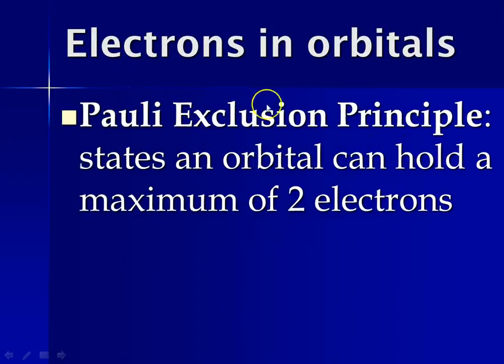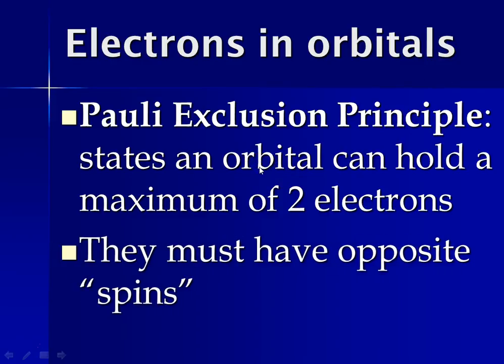So continuing along, the next thing we talk about is the Pauli exclusion principle, and that states that any given orbital can hold a maximum of two electrons, and they must have opposite spins in order to hang out together. So remember, electrons are negatively charged. In order for them to hang out in the same bedroom, so to speak, which is what an orbital is kind of like, they have to have opposite spins. So we show them as an arrow up or an arrow down.